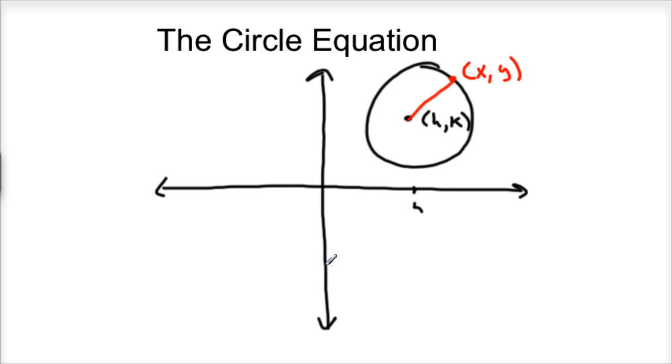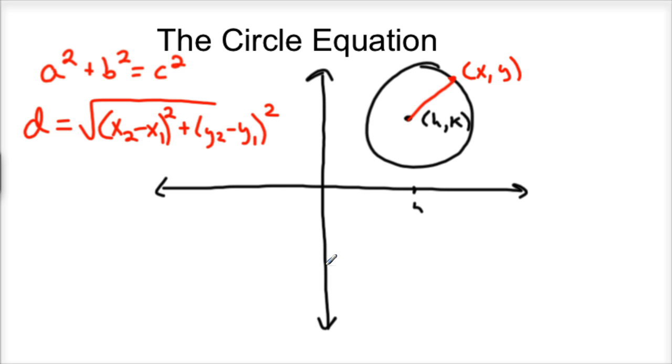You can just use Pythagorean Theorem or distance formula to figure this out. I'm not going to get into the difference between these, but essentially these are the same thing. Distance formula equals the square root of (x2-x1)² plus (y2-y1)².